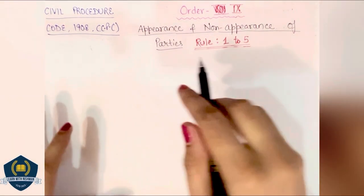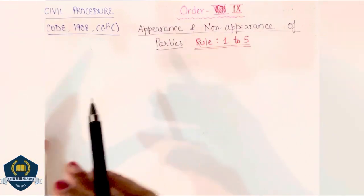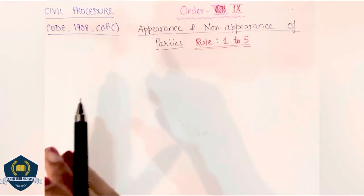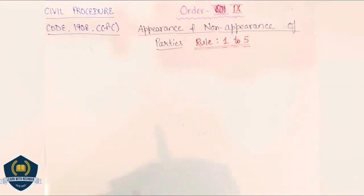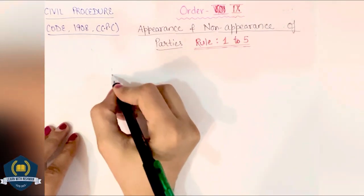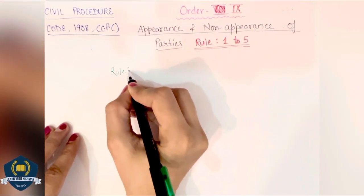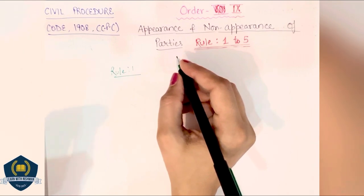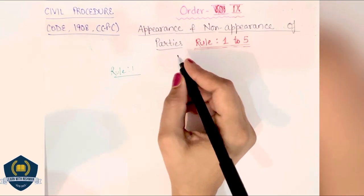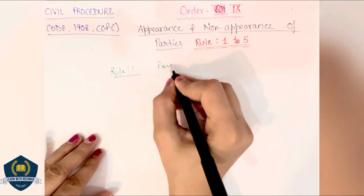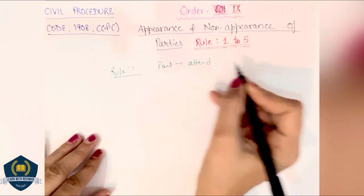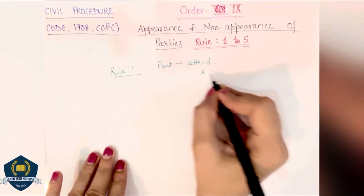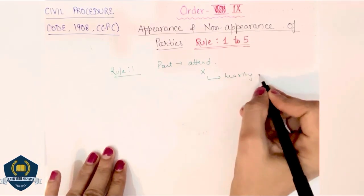Coming to the very first rule, as you can see, here we can see appearance and non-appearance of parties. We will see that when a suit is running, when parties appear or if they are non-appearing, what effect does this have. Rule 1 says the party shall be attendant in the court and the suit shall be heard unless the hearing is adjourned to a future date. मतलब जो party होगी उसको attend रहना पड़ेगा during the hearing, and if it is not, then वो hearing adjourn हो जाती है।